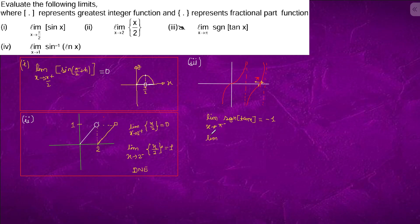The limit x tending to π plus of signum(tan x): at π plus, tan x is some positive value between 0 and 1, so the greatest integer is 0. Since the left-hand limit is −1 and the right-hand limit is 0, the limit does not exist.